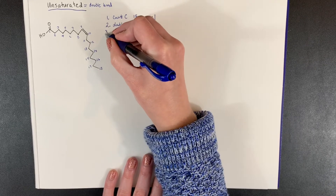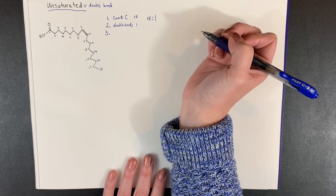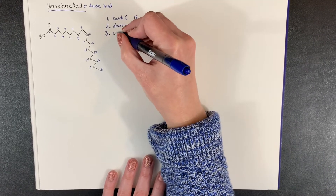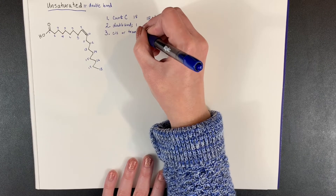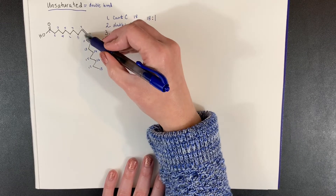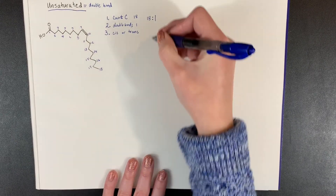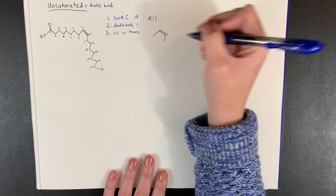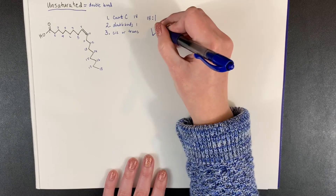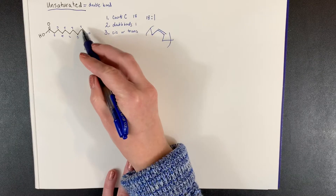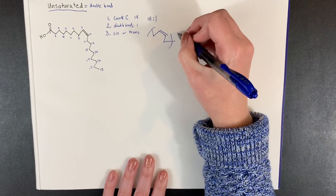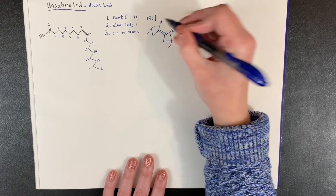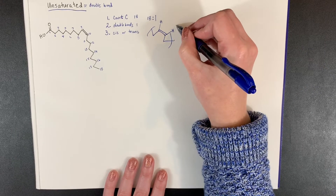Now we have some extra steps in naming if you have an unsaturated fatty acid. At the double bond, you need to figure out if it is cis or trans. What I look at is which way the hydrogens are pointing. In this example, we would have a hydrogen coming out this side and a hydrogen coming out this side. When the hydrogens are on the same side, we call this cis.